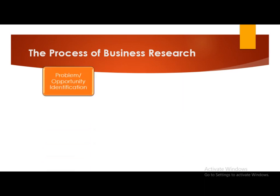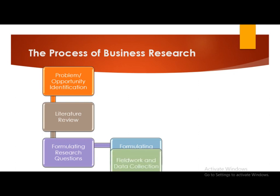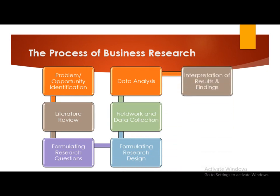The very first step is Problem Identification or Opportunity Identification. This step is followed by Literature Review. After that, Formulating Research Question is the next step, then Formulating Research Design, Field Work and Data Collection, Data Analysis, Data Interpretation, Finding out Results and Findings, and finally Management Decisions and Implementation. So these are the various steps involved in the process of Business Research. Now we will learn each step one by one in detail.